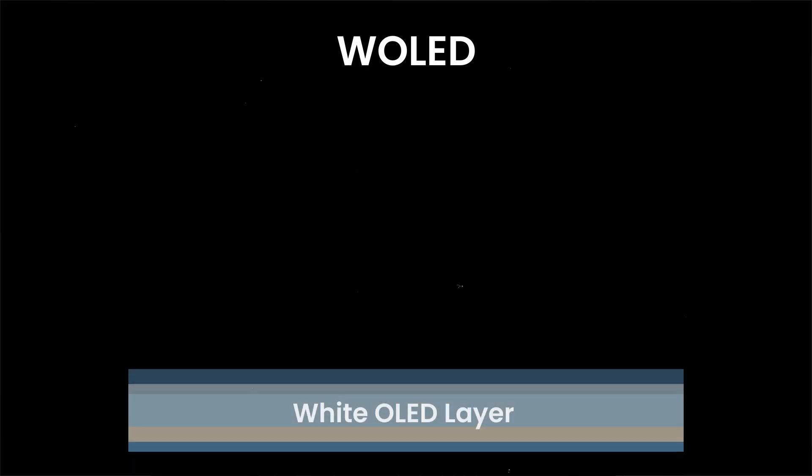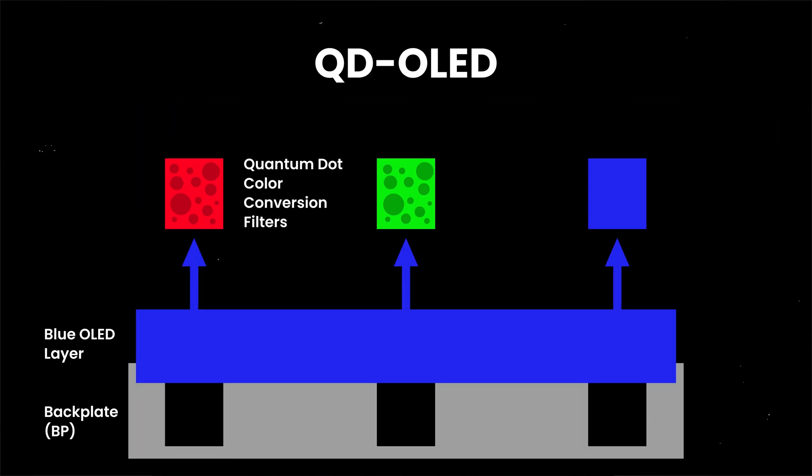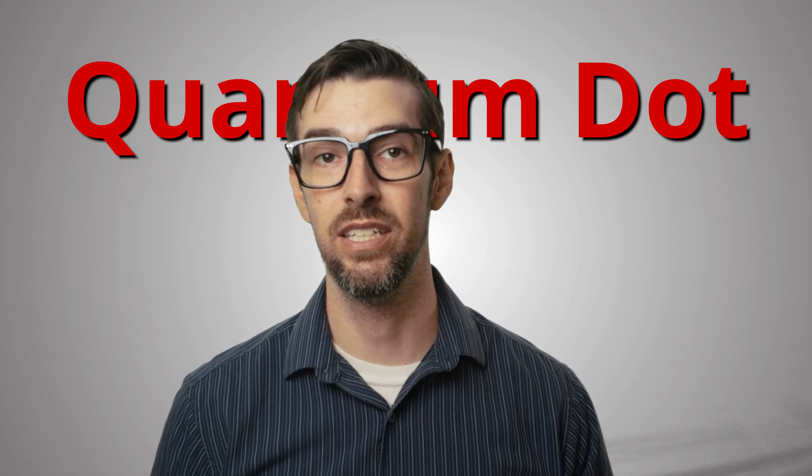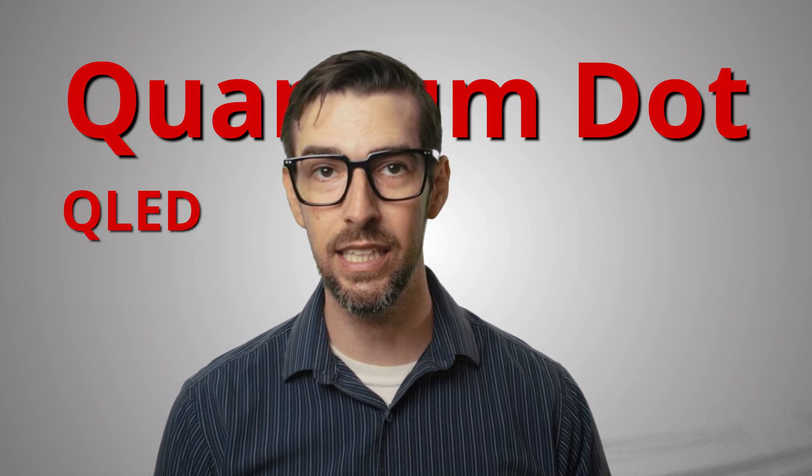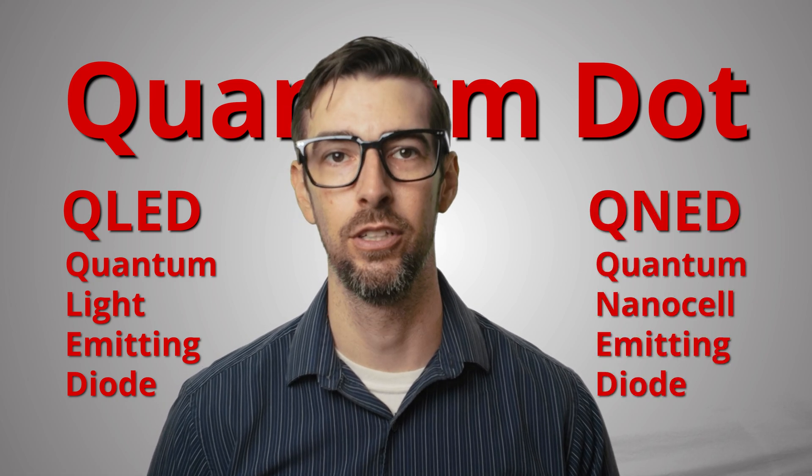Meanwhile, color reproduction on an LED-slash-LCD TV could be handled by a traditional color filter which electronically filters white light in order to generate color for each pixel, or by quantum dot technology which uses microscopic light-sensitive dots to add color to the blue LED backlight. Quantum dot TVs typically go by names such as QLED, Quantum Light Emitting Diode, or QNED, Quantum NanoCell Emitting Diode, depending on the manufacturer of course. It's enough terminology to make your head spin honestly, but the good news is that the new RGB LCD tech replaces all that with something mostly new.